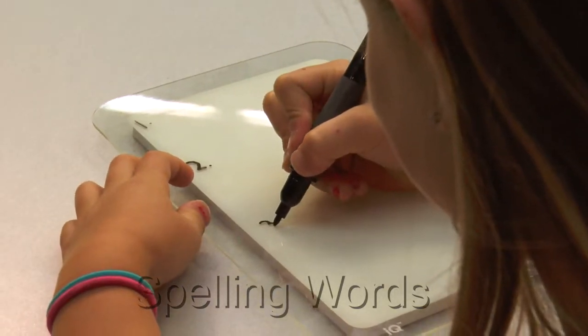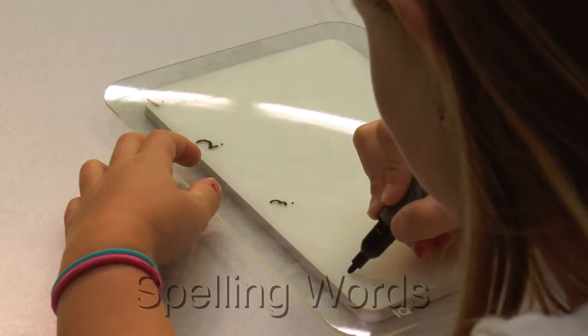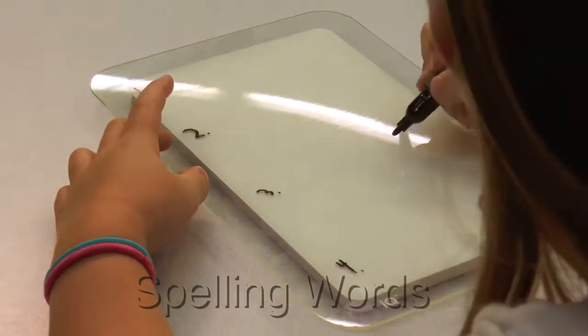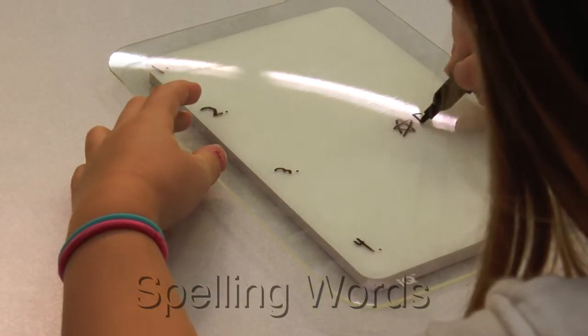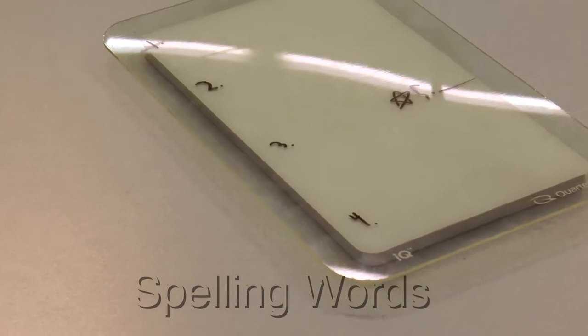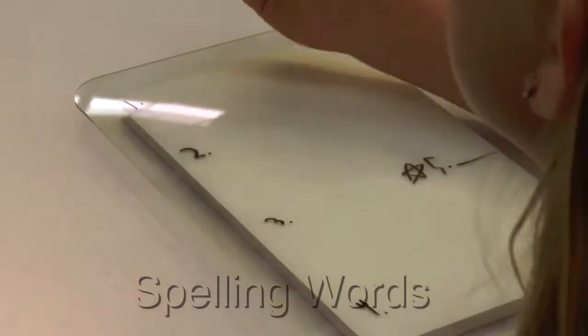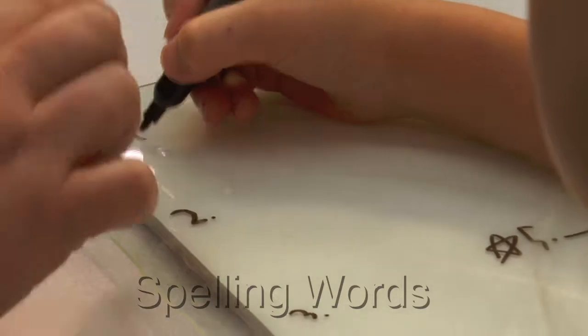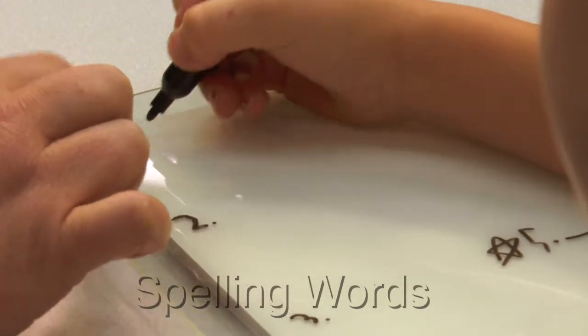Okay, number one, we're going to do the word farm. The farm is stinky. What's the word? Good. Now when you write it, I want you to tell your pencil what you're saying. Say 'f'. Good, beautiful job.